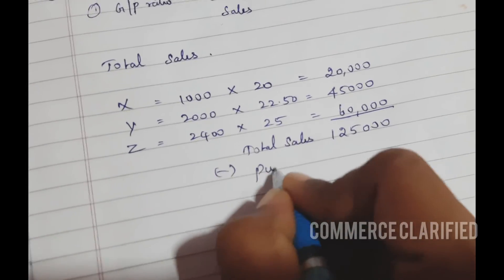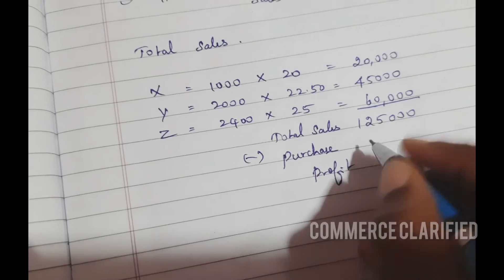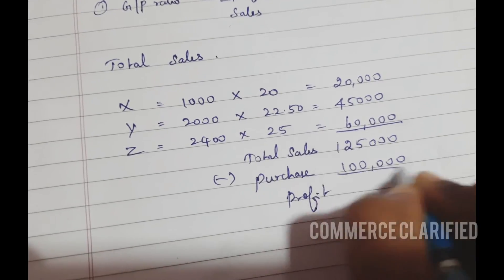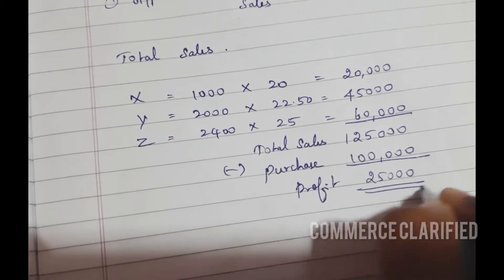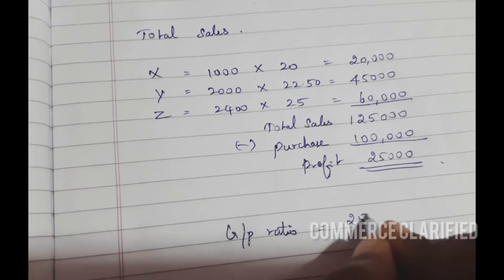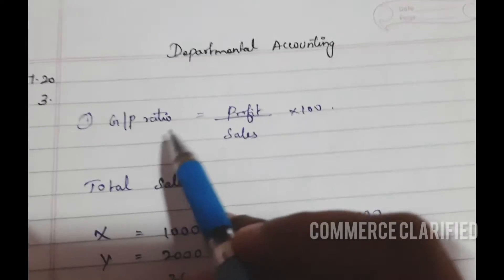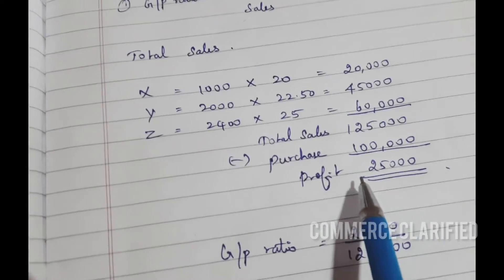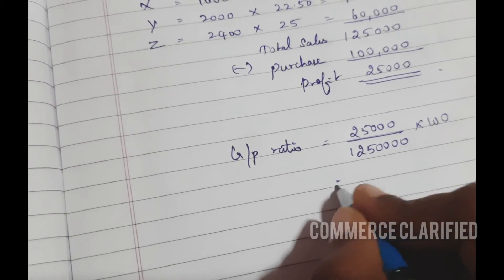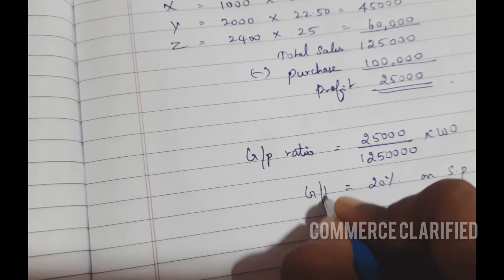We can find the profit: profit equals sales minus purchases. Sales is Rs. 1,25,000 minus purchases of Rs. 1,00,000 — so profit is Rs. 25,000. GP ratio equals 25,000 divided by 1,25,000 into 100. The GP ratio is 20% on selling price.